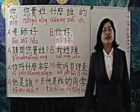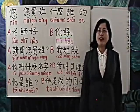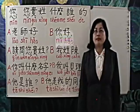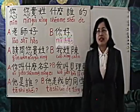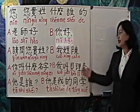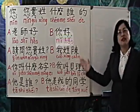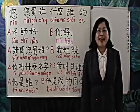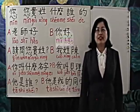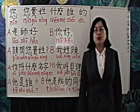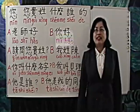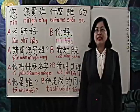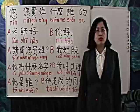姓 can be both a noun or a verb. When it is used as a verb, an object must follow it. For example, 我姓陈 — 陈 is the object. By the way, 姓 is usually negated with 不. For example, 你姓李吗? — Is your last name 李? 我不姓李 — My last name is not 李.